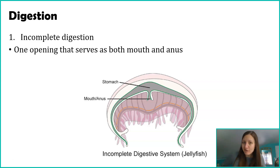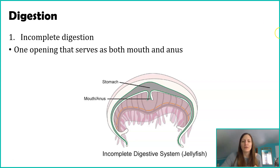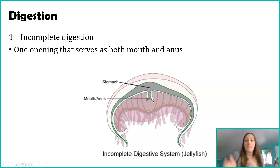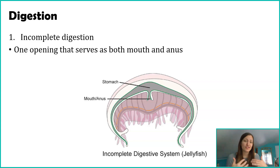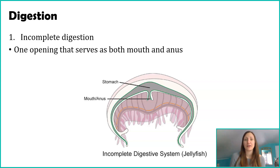There are quite a few organisms that do this, and the example I have on here is a jellyfish. A jellyfish, on the bottom side of the jelly, has a mouth and anus — where food is going to come in, it's going to digest in its stomach, and then those wastes are going to be released in the same area.